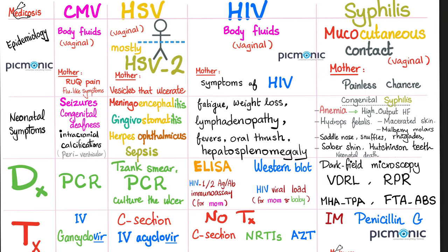CMV — neonatal symptoms include seizures, congenital deafness, intracranial periventricular calcifications. Don't forget the hypotonia and the chorioretinitis. Diagnosed with PCR; treat with ganciclovir. If it ends in -vir, it's antiviral.